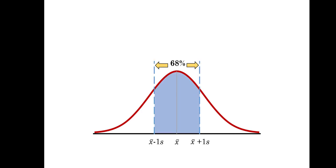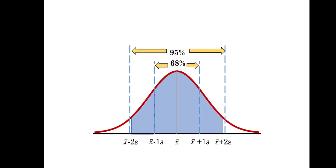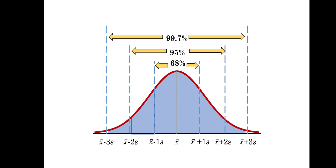We can see that our data is symmetrical and the mean is at the center. Here we're focusing on the sample, so at the center we have the sample mean. When we move one standard deviation above and below, we have approximately 68 percent of the data within one standard deviation of the mean. Within two standard deviations we have approximately 95 percent, and within three standard deviations we have approximately 99.7 percent.